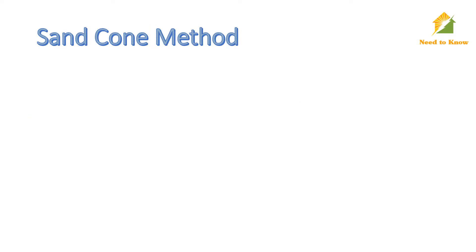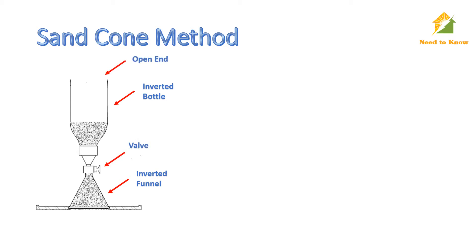This is the apparatus of the Sand Cone Method. Sand Cone Apparatus consists of an inverted bottle connected to an inverted funnel by a valve. The bottle upper end is open, through which it is filled with calibrated sand of known unit weight.